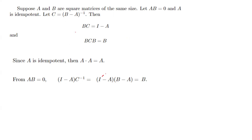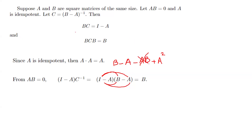Expanding (I minus A)(B minus A): I times B is B, minus I times A which is A, minus AB, plus A squared. So we get B minus A minus AB plus A squared. Using the condition that AB equals zero, that term vanishes. Since A squared equals A, we get A minus A equals the zero matrix, and we end up with B.